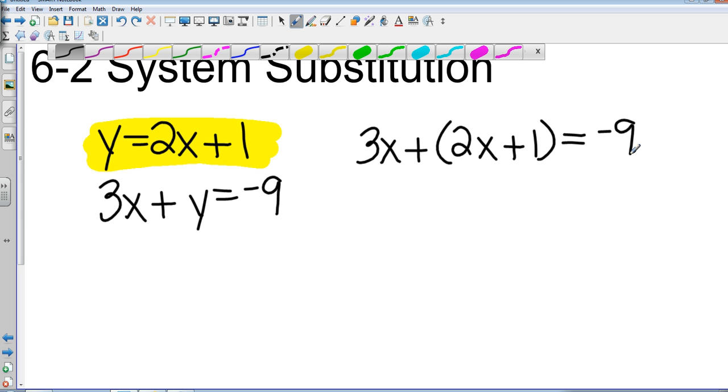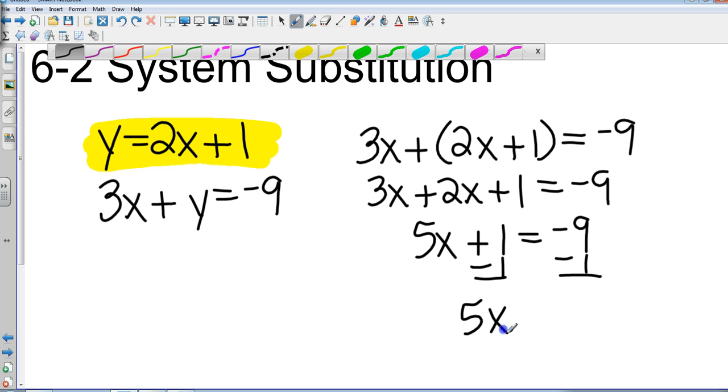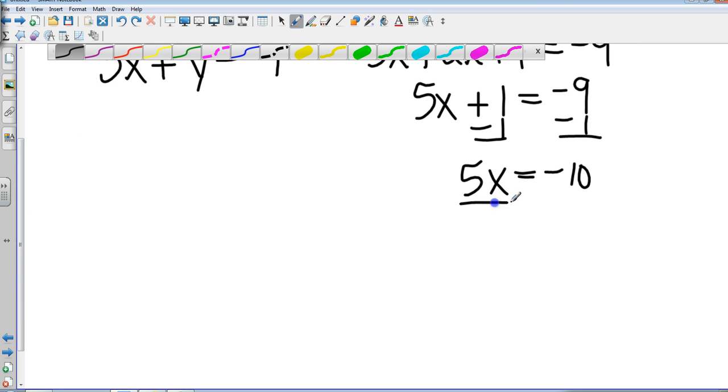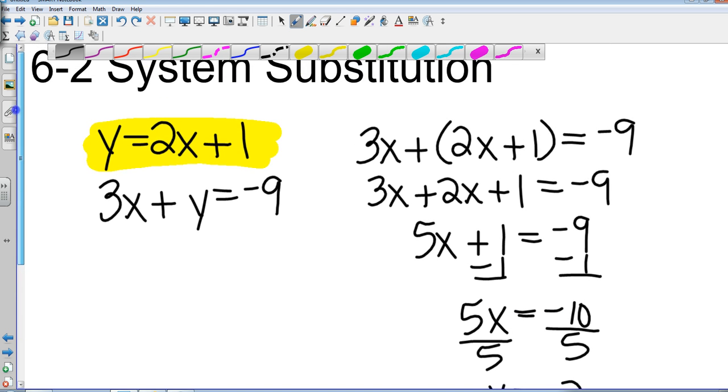Now I can't combine any like terms in there, so I just eliminate the parentheses. That gives me 3x plus 2x plus 1 equals negative 9. Now I can combine like terms. That gives me 5x plus 1 equals negative 9. Subtract 1 from both sides, I get 5x equals negative 10. Divide both sides by 5, and x equals negative 2. So that's my x coordinate.